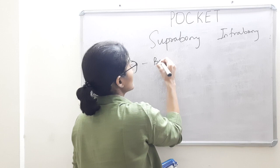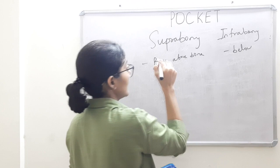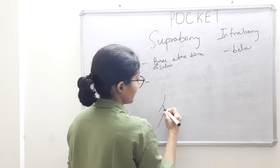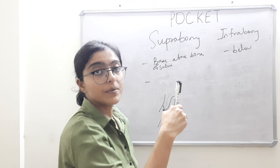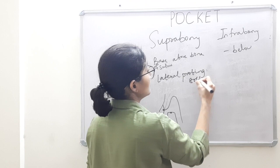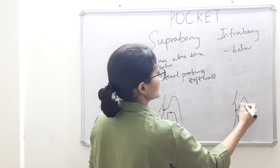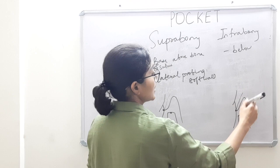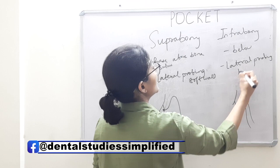In suprabony pocket the base is above the bone — when you probe this pocket, the lateral wall will be soft tissue only, so lateral probing will not give any resistance. Whereas in infrabony pocket, the base is below the crest of the alveolar bone — when you probe laterally, you will get a hard resistance of the bone. So lateral probing of an infrabony pocket will be hard because of the bony wall.